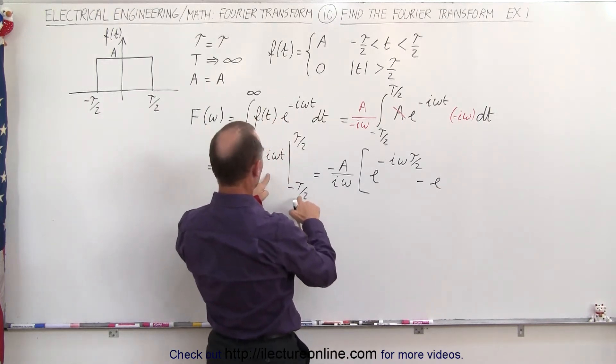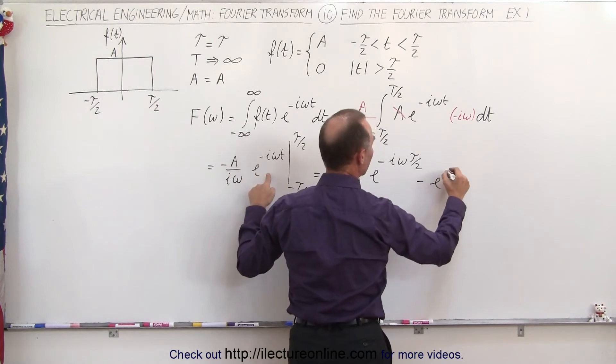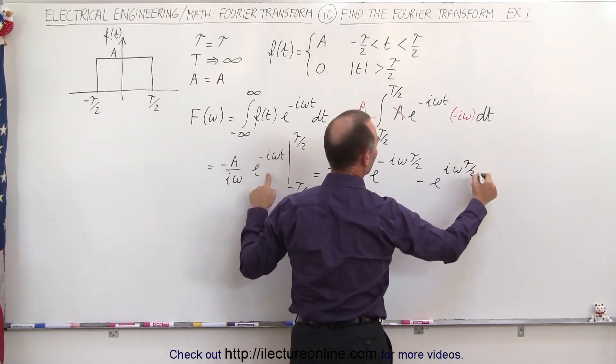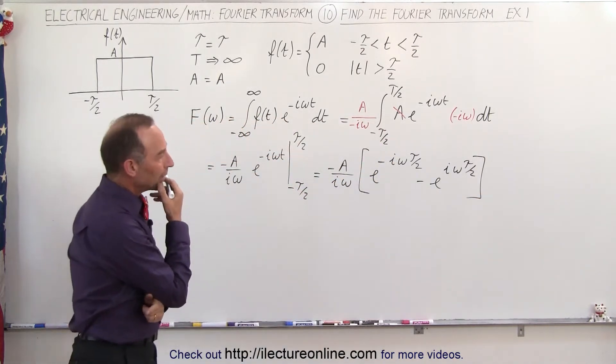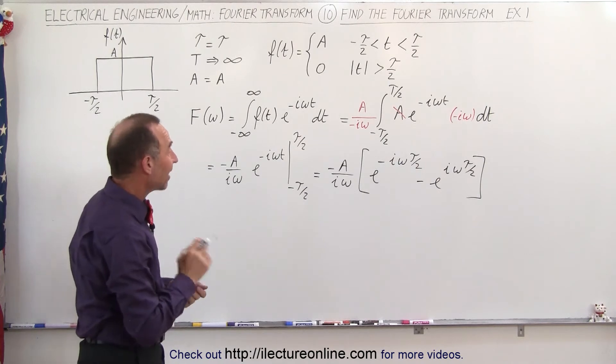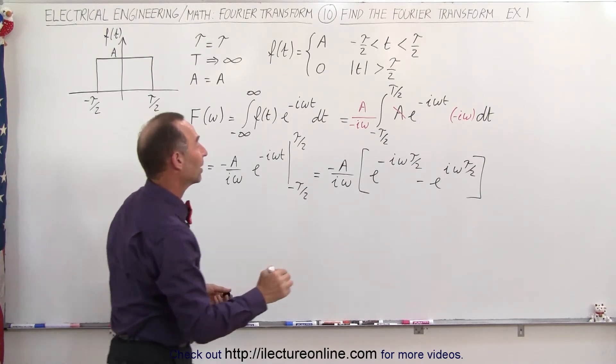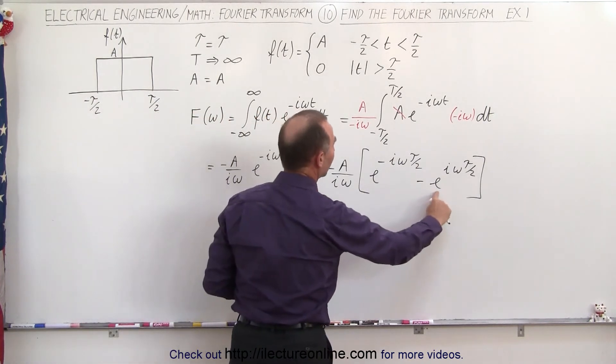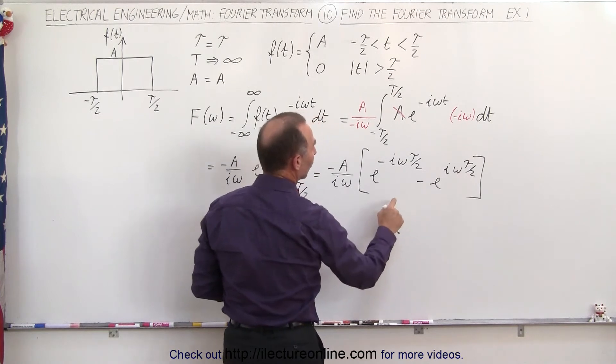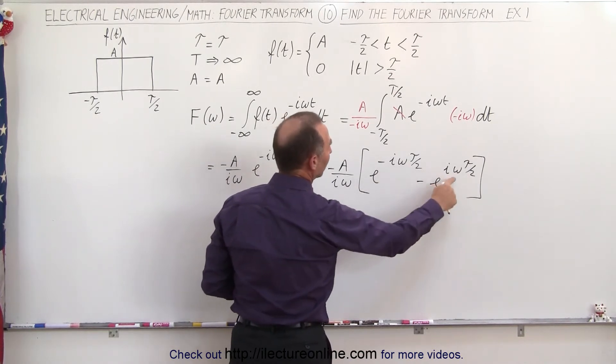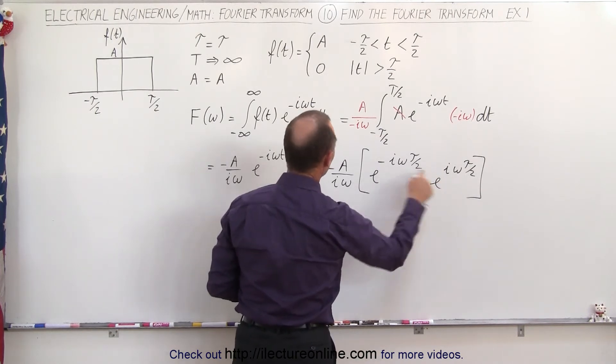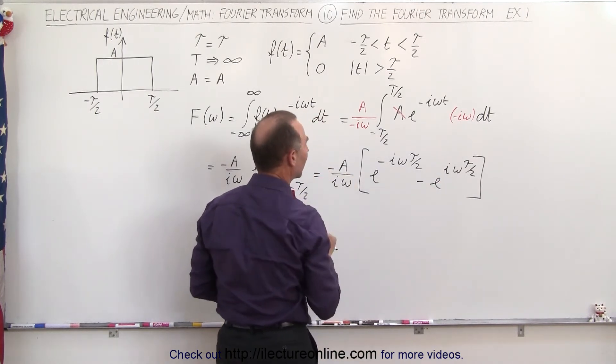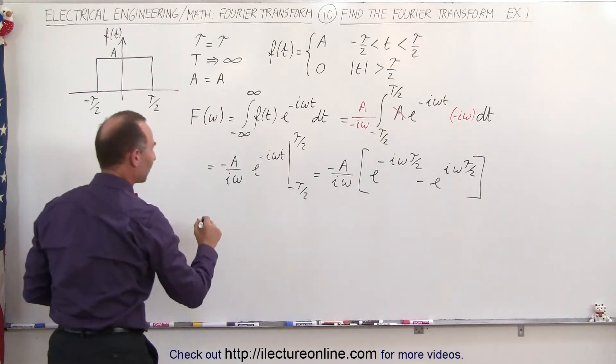...so e to the plus i omega tau over 2. Then when I look at that, I realize that looks a lot like the sine function. All I'm missing at the bottom here is a divide by 2i, and of course I want this to be positive, I want this to be negative, so I can actually move that around—put the positive in front, put the negative in the back—by changing that, by using the negative sign here. So I'm going to do that.